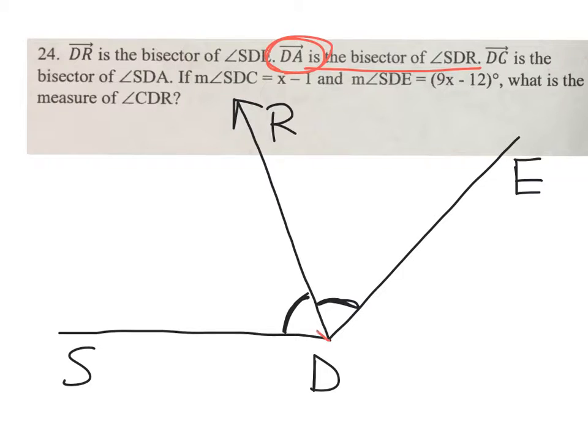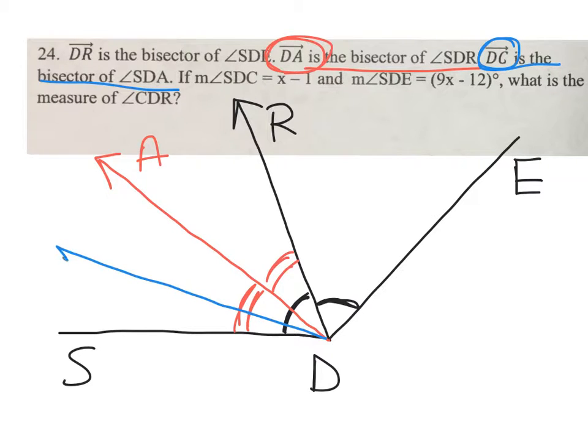Continuing reading, we read that DC now bisects that angle that we just made, SDA. So we have another ray coming out here where this smaller angle now is congruent to that smaller angle.